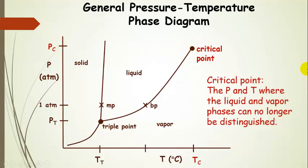then we can no longer distinguish the liquid and the vapor phases. So we would call it a supercritical fluid phase. So beyond that point, beyond that critical pressure and critical temperature, we can no longer distinguish the liquid and vapor phases.